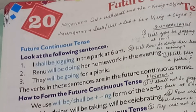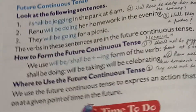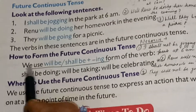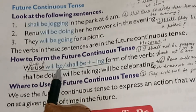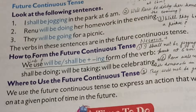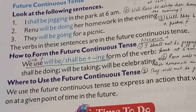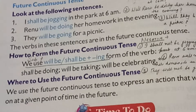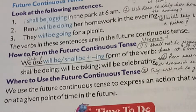For doing future continuous tense, first of all we will go with the format, how to write it. Here is the format: subject plus will be or shall be plus ing form of the verb. Subject humara kya hota hai? I ya we ho ga toh shall be or will be dono chalenge. Otherwise sabke saath will be chalega plus ing form of the verb. This is what we have to do for future continuous tense — will be or shall be plus ing form.